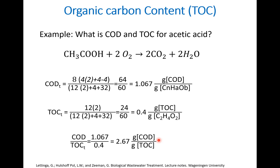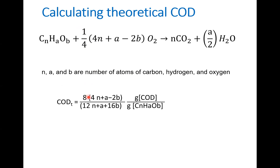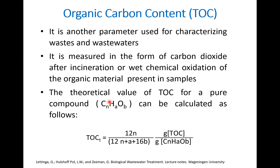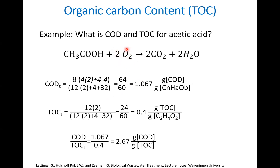To see this in an example: what is the COD and TOC for acetic acid? To calculate the COD, we write the oxidation equation. Two moles of oxygen are needed to oxidize one mole of acetic acid, producing two moles of carbon dioxide and two moles of water. Using the formula 8 × (4n + a − 2b), with n=2, a=4, b=2, we get 8 × (8 + 4 − 4) = 64.